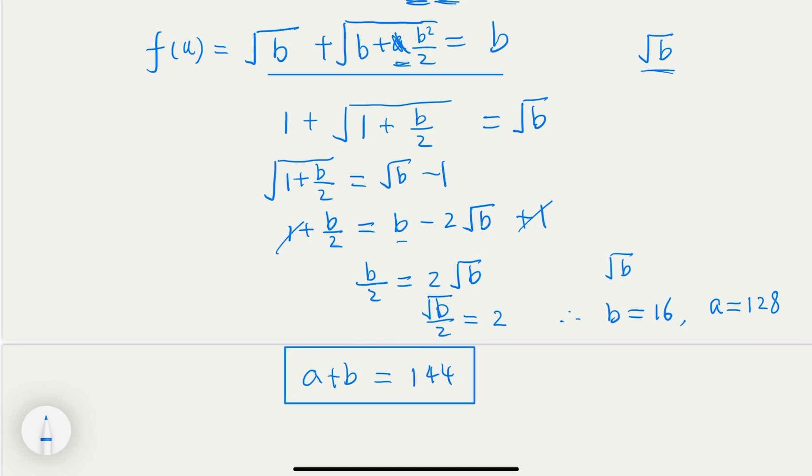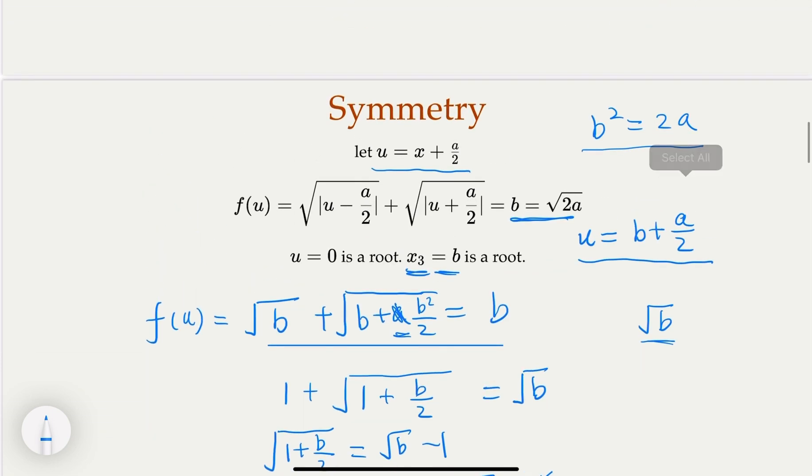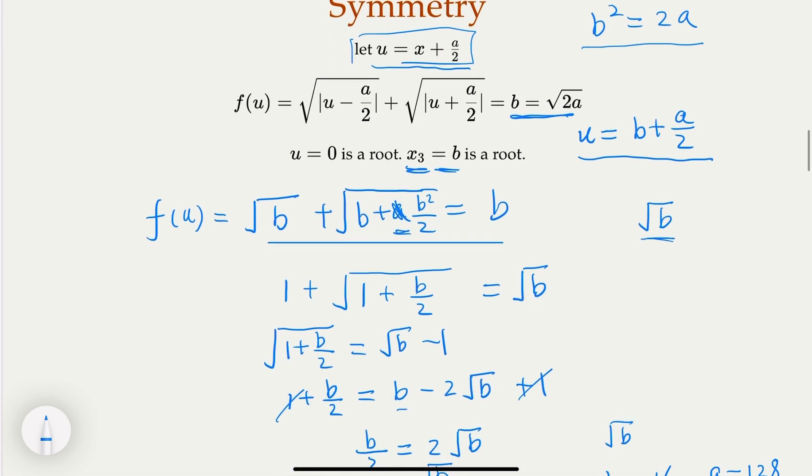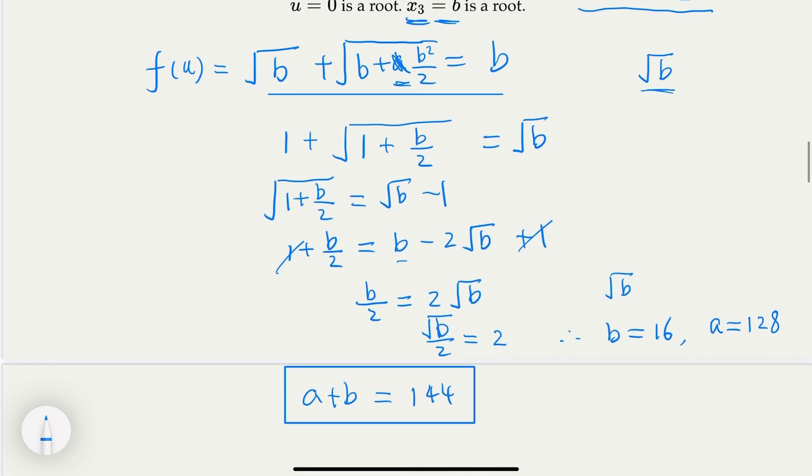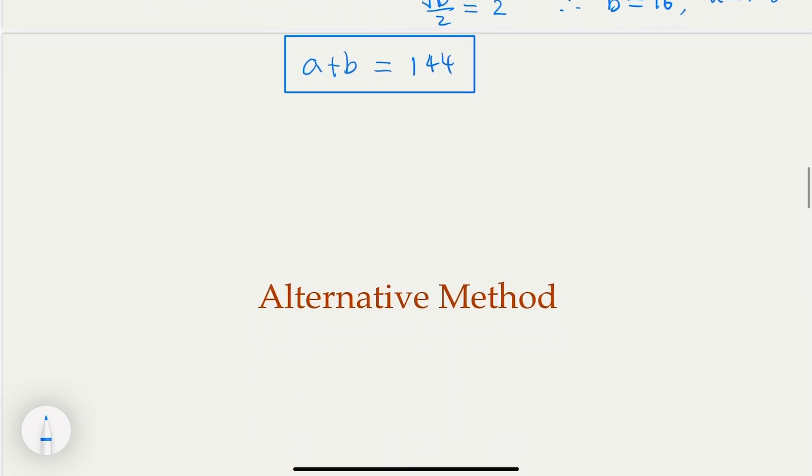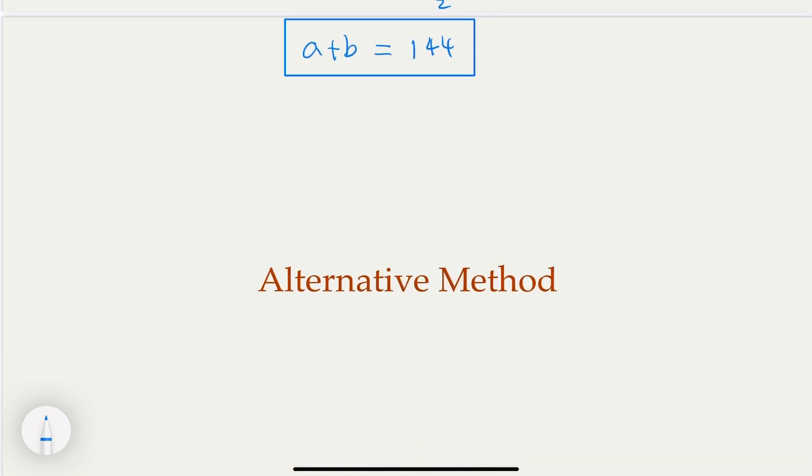Alright, so here, the trick is actually the variable substitution, and then turn this function into an even function. Alright, there is an alternative method, and I won't recommend it, but just FYI, I present it here briefly.